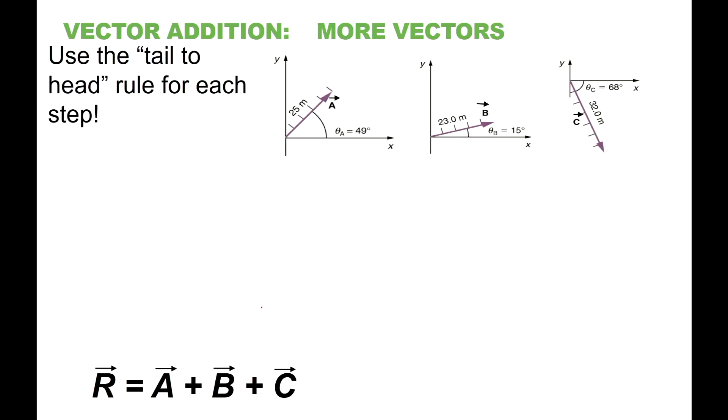What are we going to do if we have more vectors to add? Nothing new. A, B. We can draw the sum of A and B. And now we can add the third arrow, C.